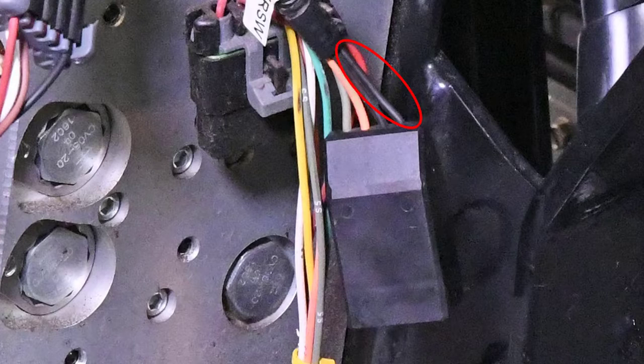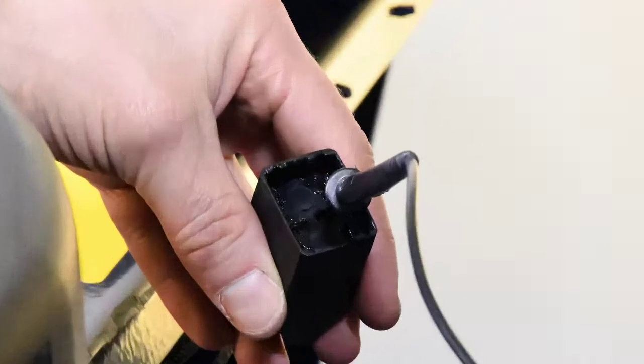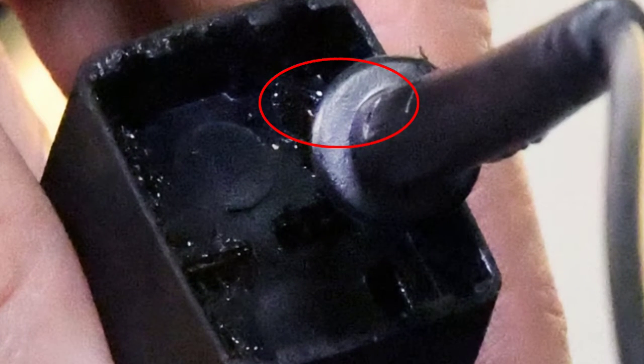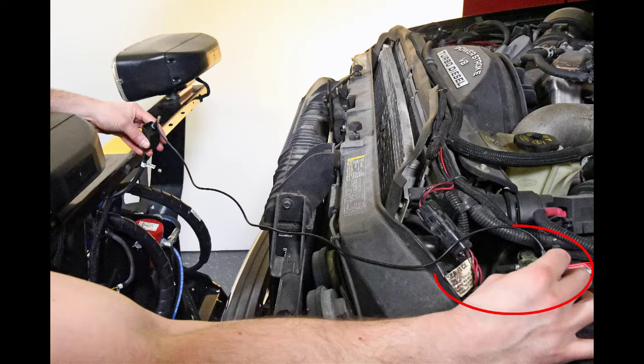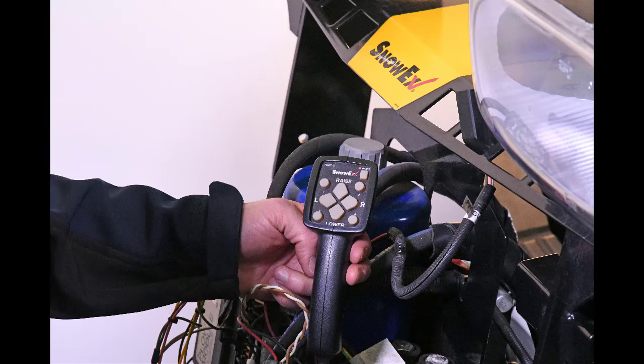Then hold the socket with the gray wire on top. Insert a jumper wire into the top right socket and the other end to a ground source. Check for a solid red light on the control. It is helpful to use the diagnostic harness for this step.